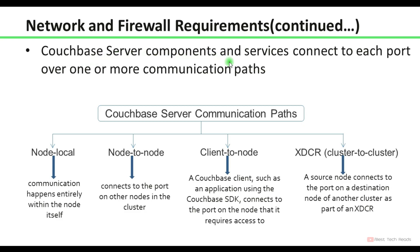Couchbase Server component services connect to each port over one or more communication paths. This diagram illustrates Couchbase Server communication paths. Communication happens node-to-local, node-to-node, client-to-node, and across data center replication — meaning cluster-to-cluster. Node-to-local means communication happens entirely within the node itself. Node-to-node means if you have four nodes in your cluster, there is communication happening among those four nodes internally. Client-to-node means a Couchbase client, such as an application using the Couchbase SDK, connects to the port on the node it requires access to. XDCR — cross data center replication — means a source node connects to the port on a destination node of another cluster.